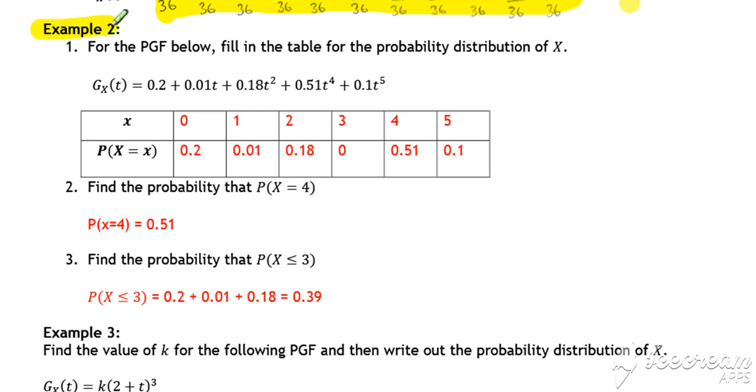Considering example 2, if we're given the probability generating function, we need to understand what that represents and how to represent that as a probability distribution. The powers of t represent the possible values that x can be.